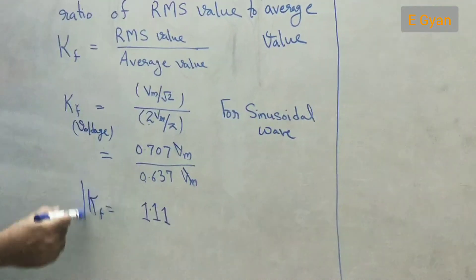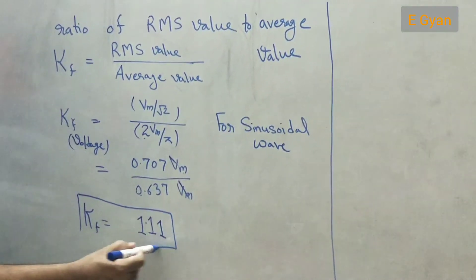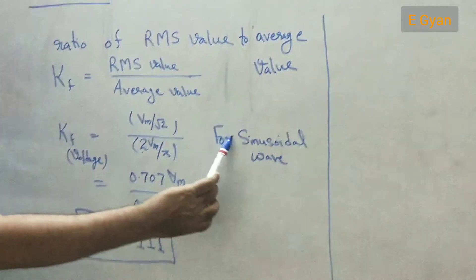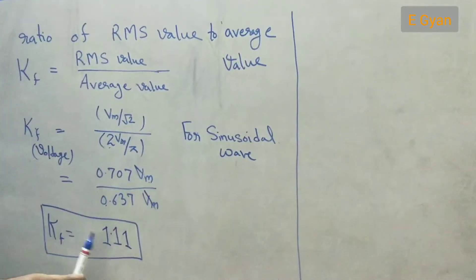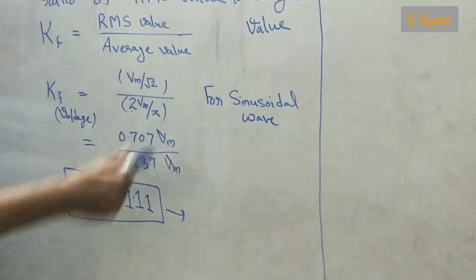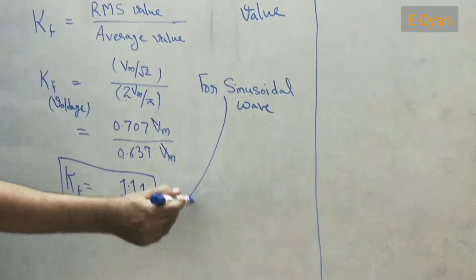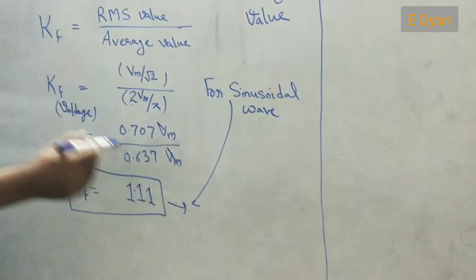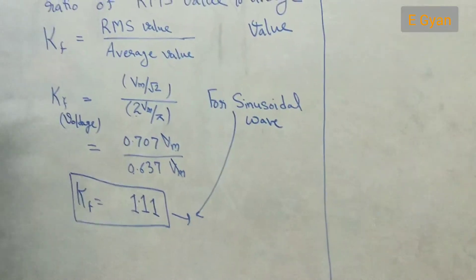That means form factor of any alternating quantity which is sinusoidal in nature is 1.11. That means the form factor of any sinusoidal wave is 1.11. So it is form factor.